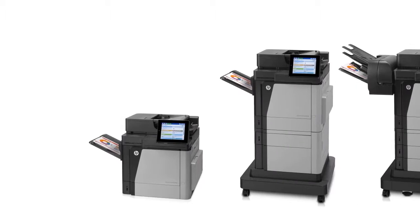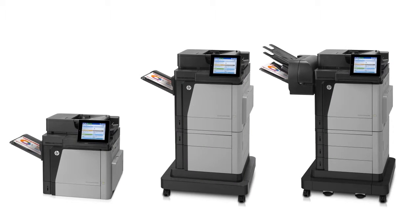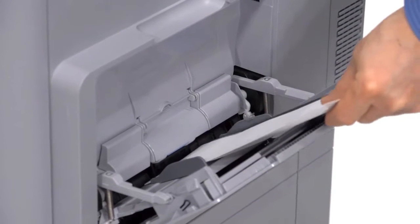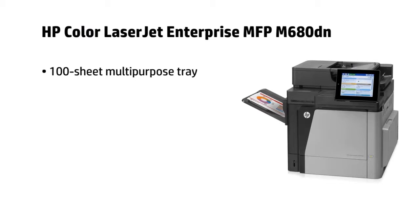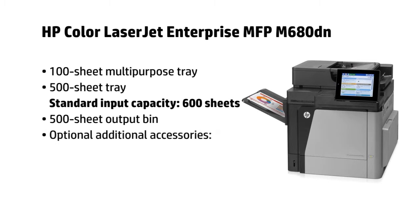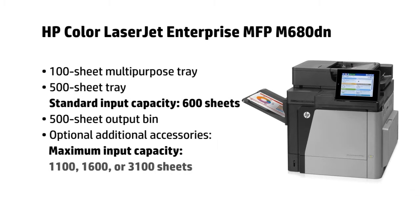The M680 series is available in three models. The DN model includes a 100-sheet multi-purpose tray that supports heavy custom media and a 500-sheet tray for a standard input capacity of 600 sheets. The standard output bin supports up to 500 sheets. You can add optional accessories to increase your input capacity to 1100, 1600, or 3100 sheets.